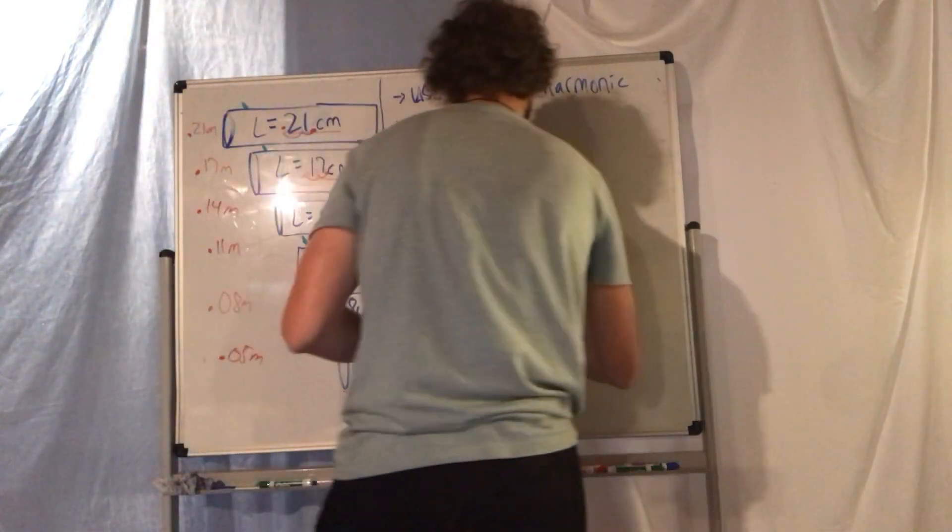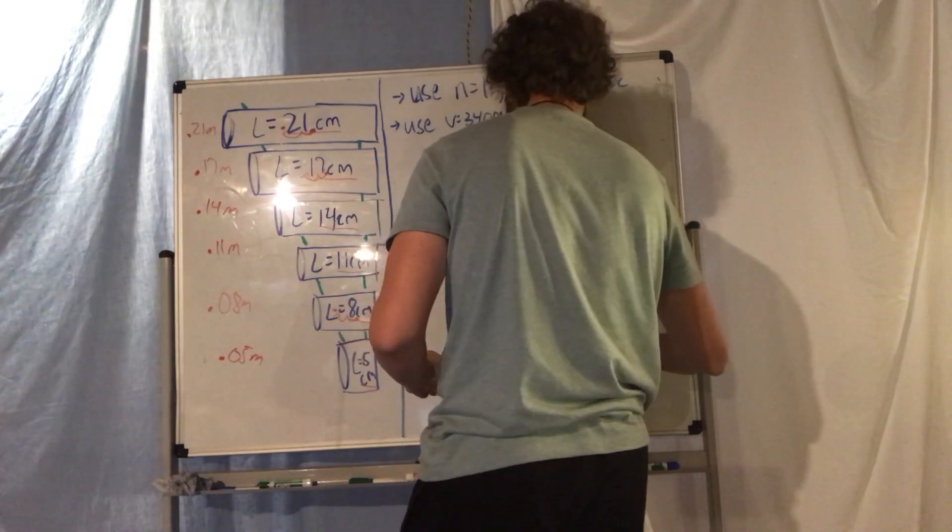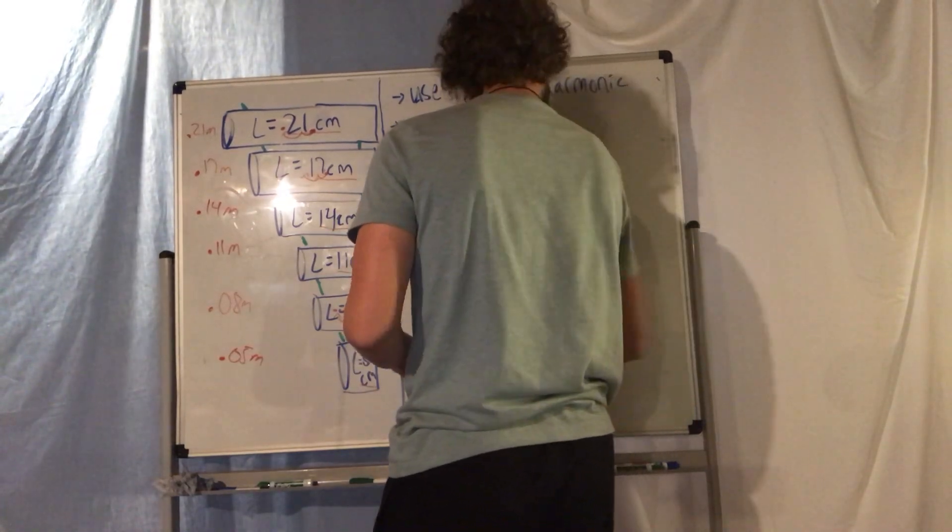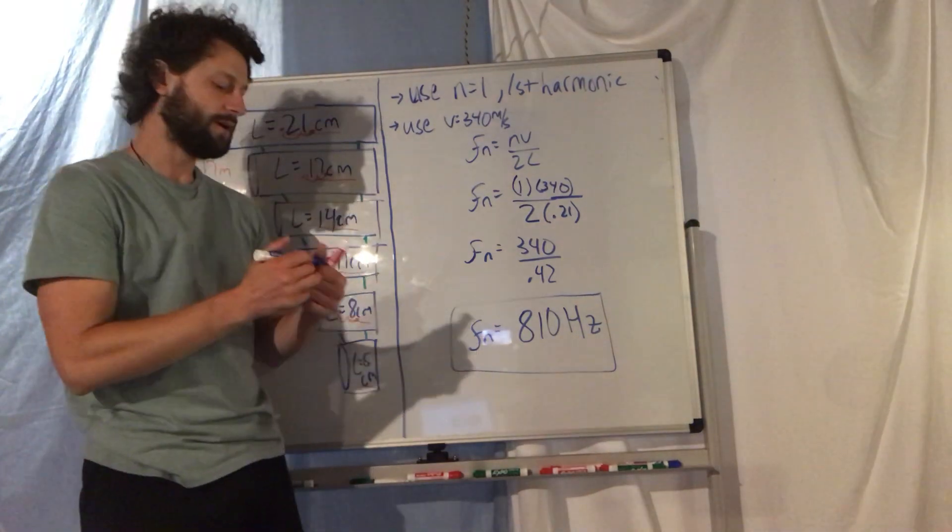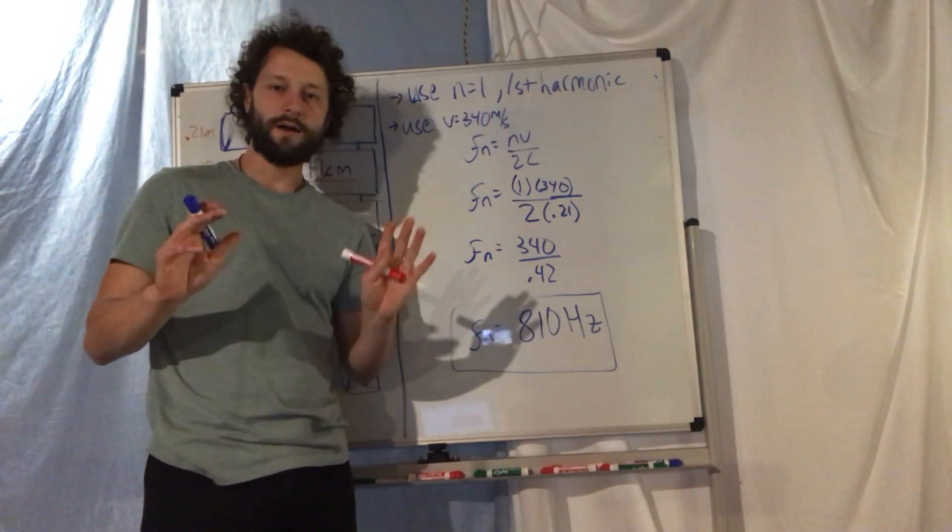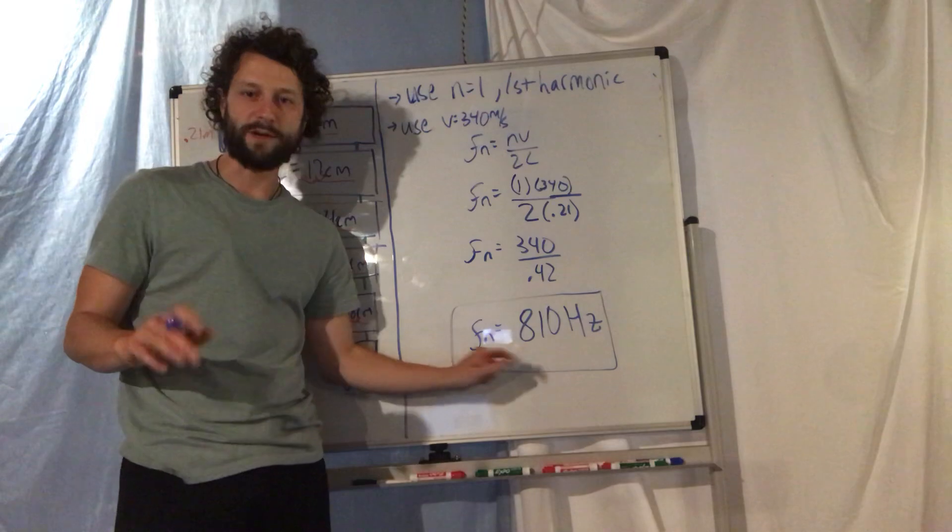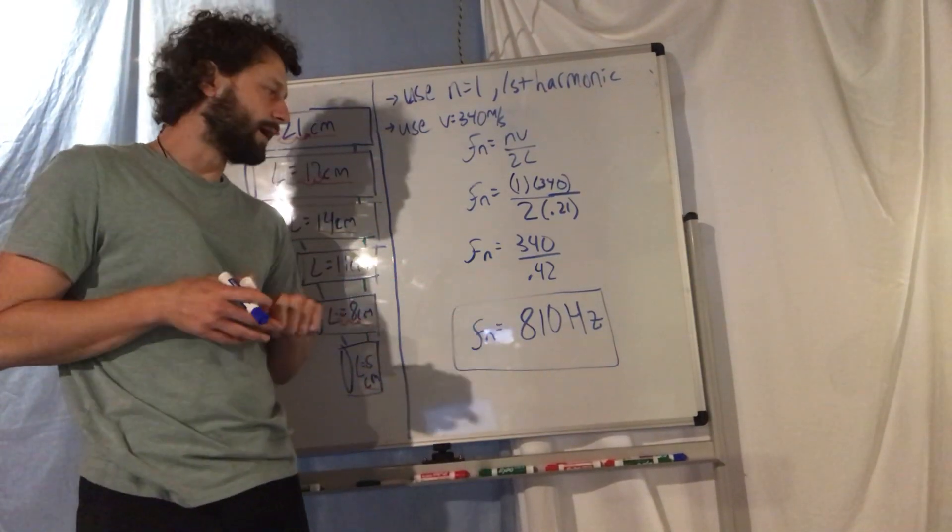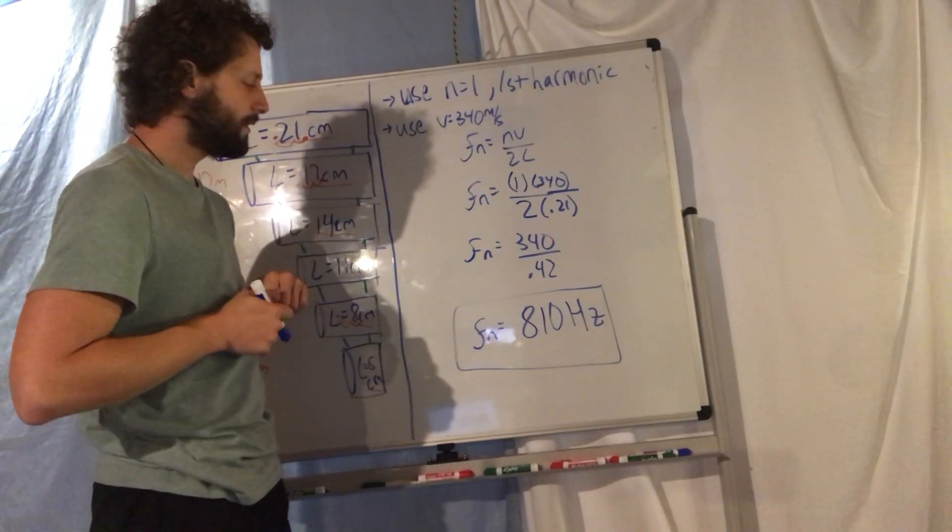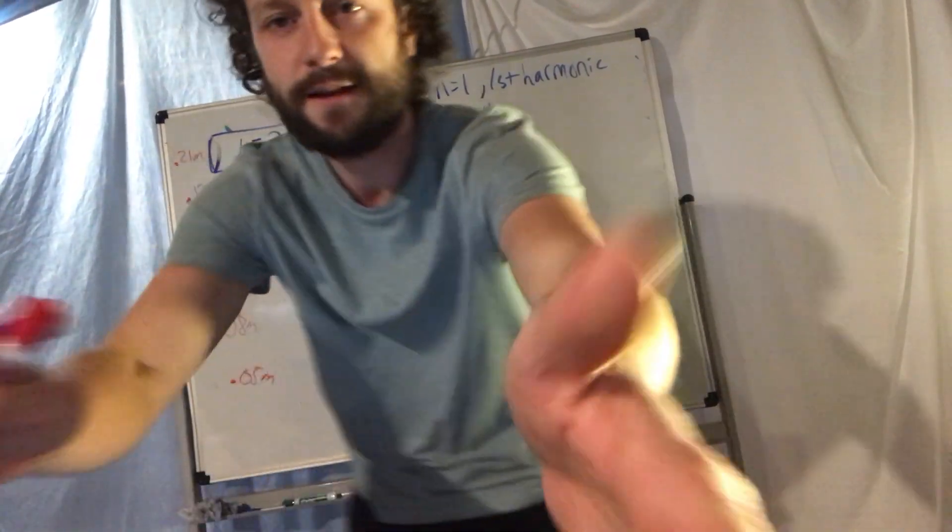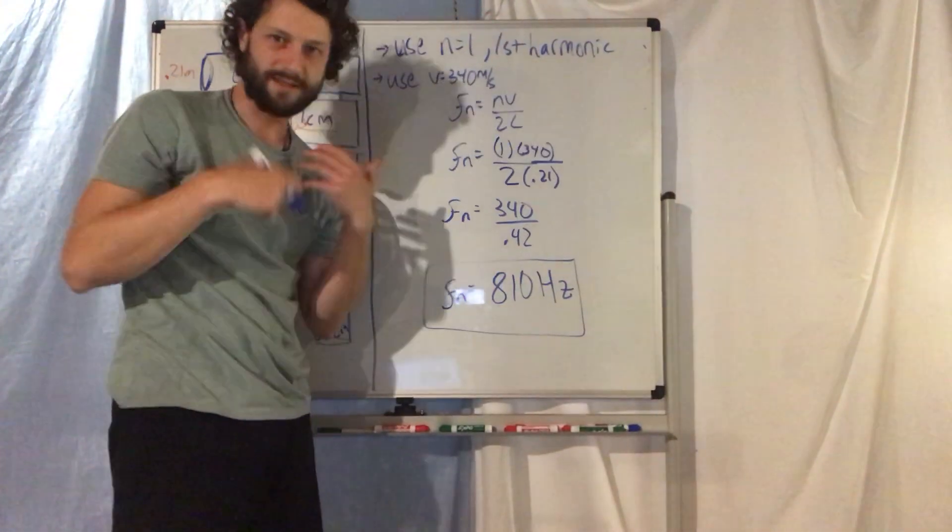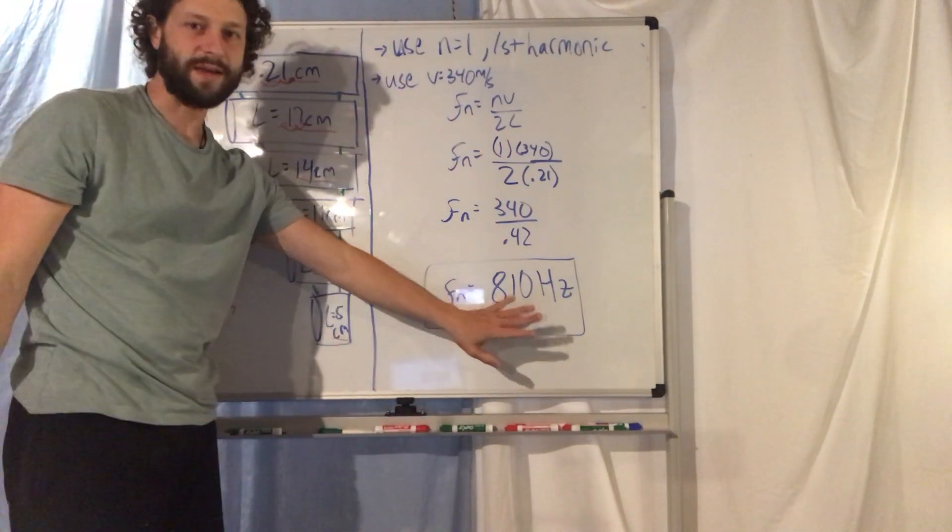And if I divide, let me get my calculator, I could divide 340 by 0.42 and I get 810 Hertz if I round it. If you have a different length, you're gonna have a different number. All of the frequencies will be somewhere between, they're gonna be big numbers.